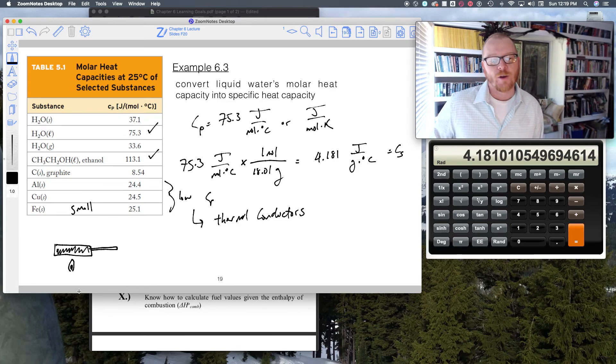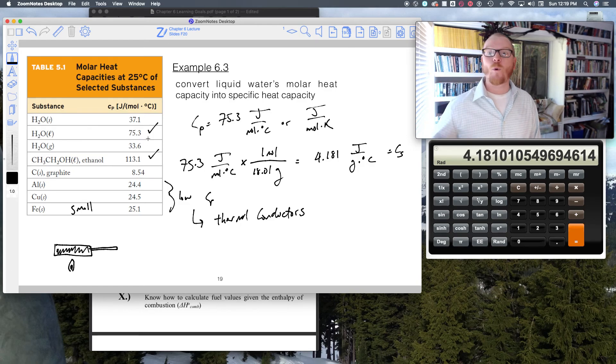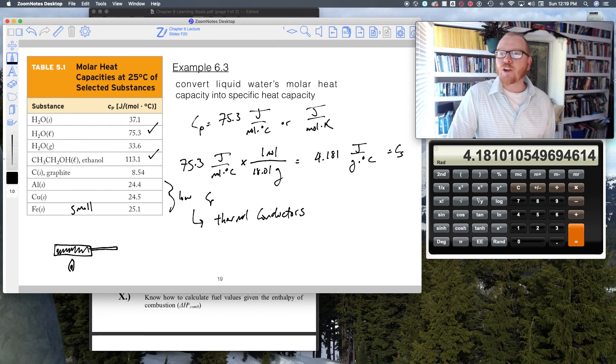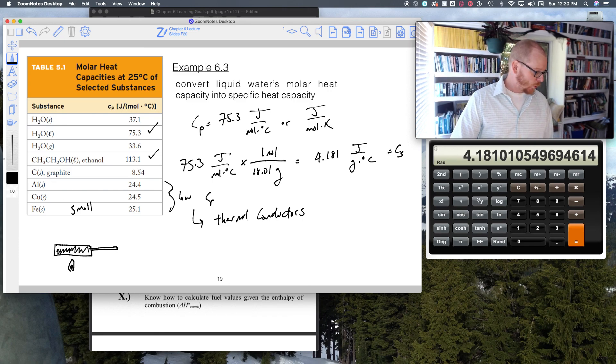Conversely, water, because it has three times the amount of heat capacity, is going to take significantly more energy to boil that water or to heat it up. This should be similar to your common everyday experiences in the kitchen: your metal pans get hot really fast, but it takes forever for that water to boil. That's because of these heat capacities, which is pretty cool.